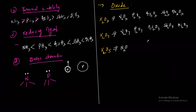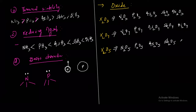For X₂O₅, the oxides formed are P₂O₅, As₂O₅, Sb₂O₅, and Bi₂O₅.